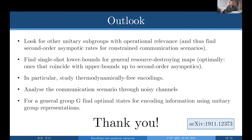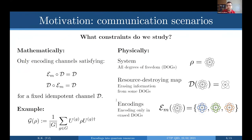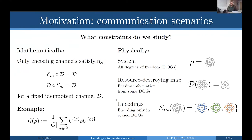Question from the chair: to apply your results, I just need a resource-destroying map, right? Yes, that's all. Is there any restriction on what a resource-destroying map can be? It has to be idempotent — applying it twice should leave the state unchanged, so it's a projector. Apart from that, nothing else. Obviously if you choose a strange one you may not have a physical interpretation, but mathematically you can use any such map.